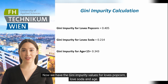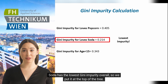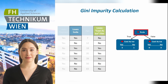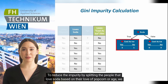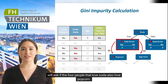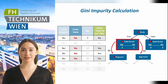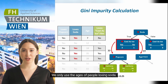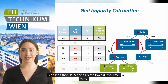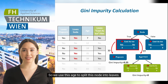Now we have the Gini impurity values for loves popcorn, loves soda, and age. Soda has the lowest Gini impurity overall, so we put it at the top of the tree. The node on the left is impure — three of these people love Cool as Ice and one does not. To reduce the impurity by splitting the people that love soda based on their love of popcorn or age, the total Gini impurity for the loves popcorn split is 0.25. Using only the ages of people loving soda, age less than 12.5 gives the lowest impurity, 0, so we use this age to split the node into leaves.